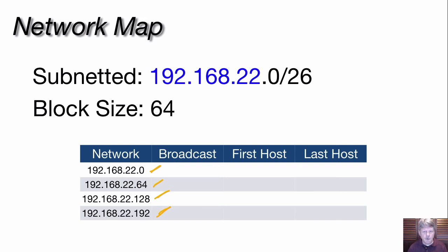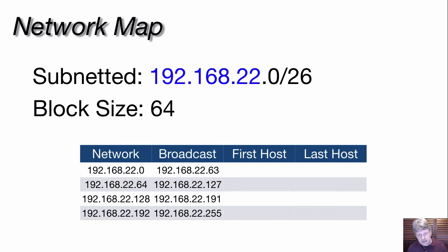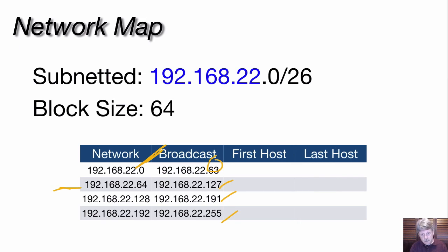Next, we look at broadcast addresses. Remember, broadcast is always the last address in the network. The easiest way to find it: take the next subnet address and subtract one, giving us 63 for the first subnet. Then do the same for each of the rest. For the last subnet, adding 64 to 192 gives 256, which is invalid — but 256 minus one is 255, which is our broadcast for the last subnet.